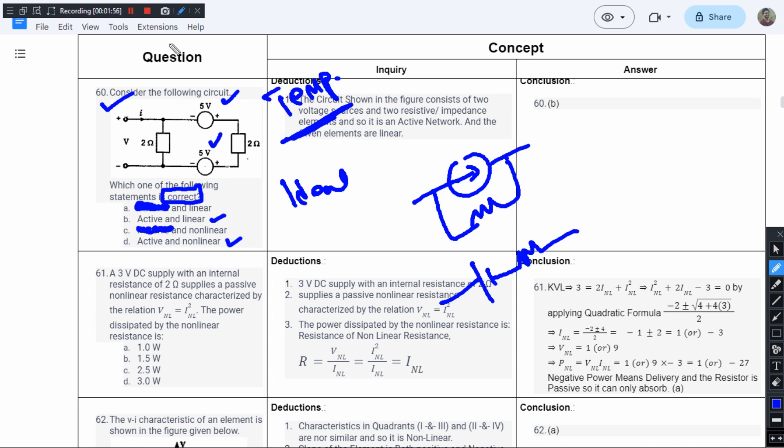From superposition theorem and from Thevenin's and Norton's theorem, we know if we want to replace this circuit, we can short circuit the voltage sources since they are ideal. The total resistance is going to be 1 ohm.